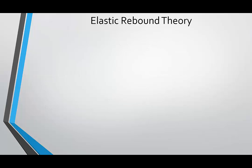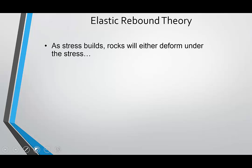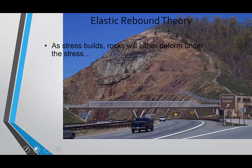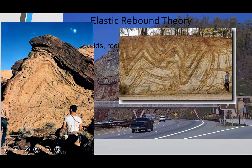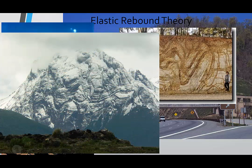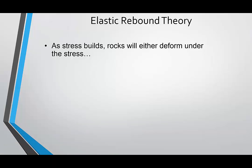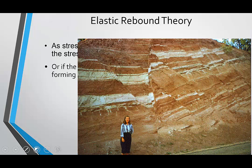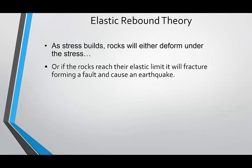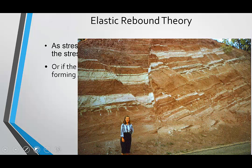This idea is called elastic rebound theory. It basically states that just like a rubber band that can be stretched, rocks can also be stretched. As rocks are put under stress they will deform — it's hard to think of a rock like a rubber band, but it can be deformed, as you can see in these pictures of synclines and anticlines. Eventually, if you keep stressing it, it reaches its elastic limit where it can't stretch anymore, and if you push it a little bit more it will snap. That snapping — that release of built-up energy — is the earthquake.